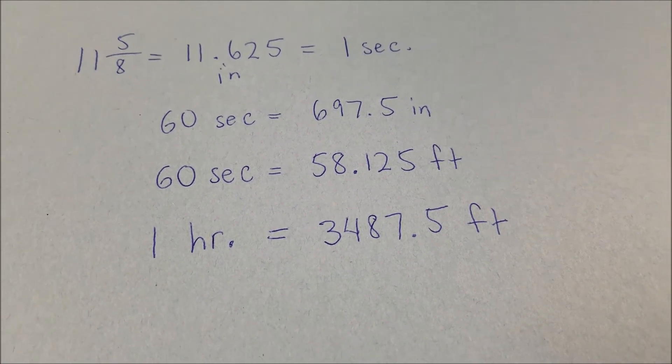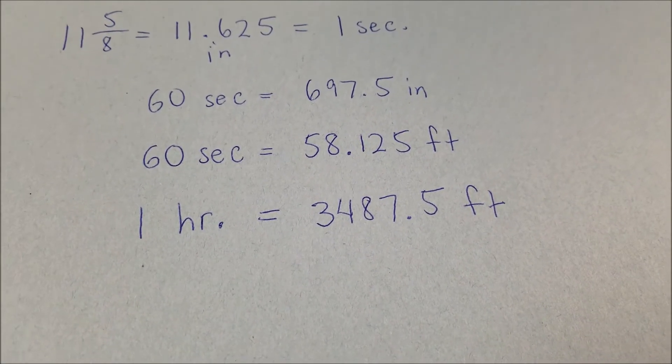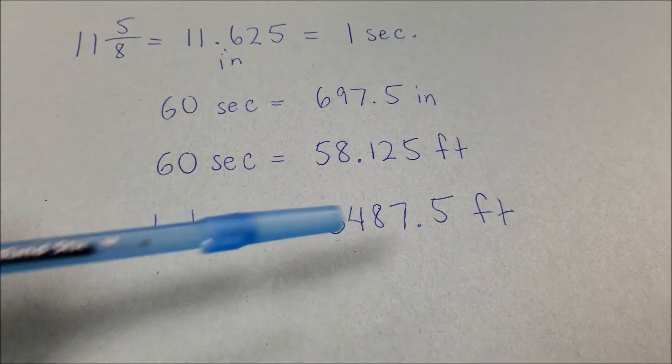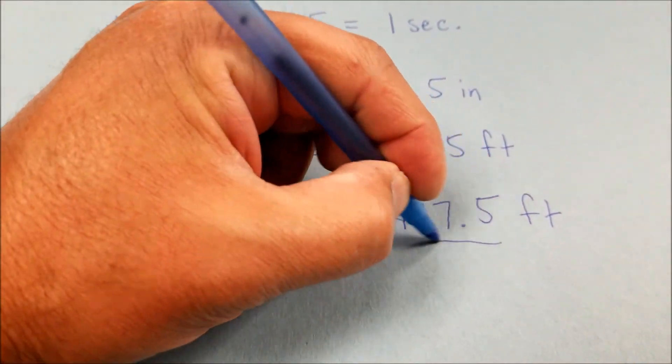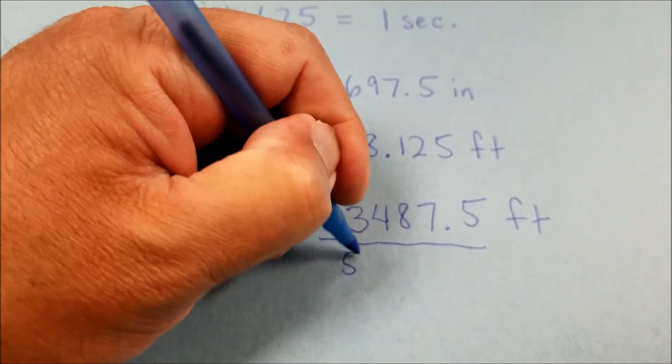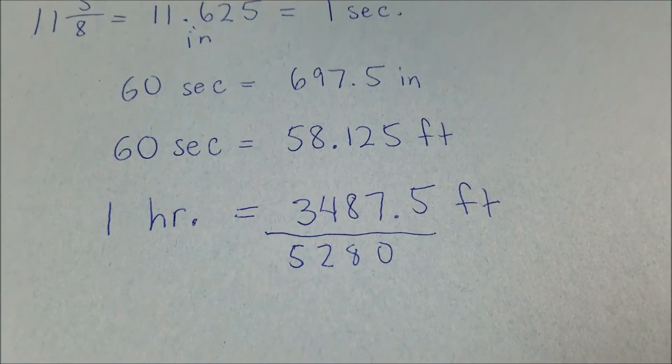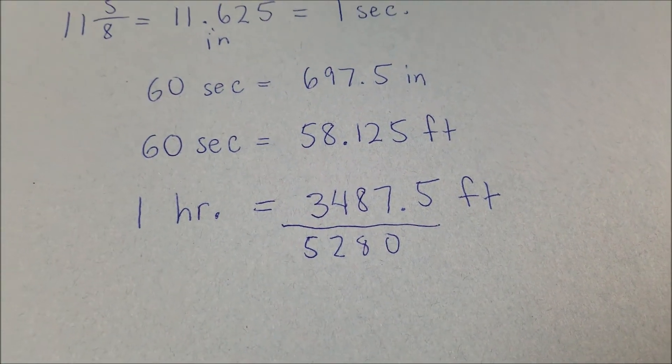So let's go ahead and get it to a decimal to figure out exactly how many miles per hour this is going to be. So basically what I'll end up doing is dividing the 3,487.5 feet by 5,280 and then we'll get that decimal. Last time guys, I'll be back.